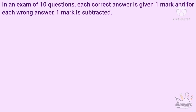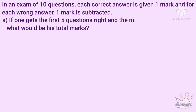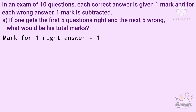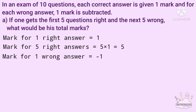In an exam of 10 questions, each correct answer is given 1 mark, and for each wrong answer, 1 mark is subtracted. If one gets the first 5 questions right and the next 5 wrong, what would be his total marks? Mark for 1 right answer is 1, mark for 5 right answers is 5 into 1. Mark for 1 wrong answer is minus 1, mark for 5 wrong answers is 5 into minus 1, that is minus 5.